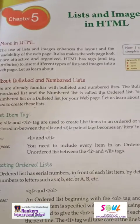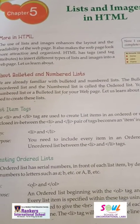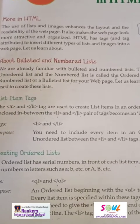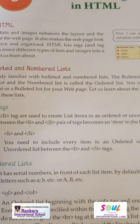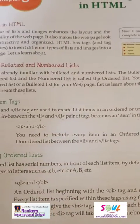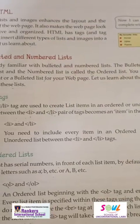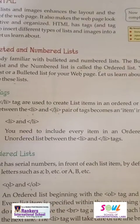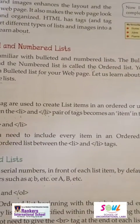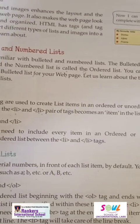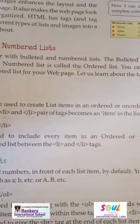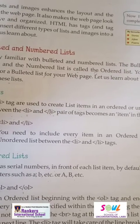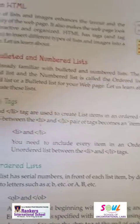Good morning. Today we will start Chapter 5: Lists and Images in HTML. In the previous class, we discussed what HTML is — HTML is HyperText Markup Language, used to create hypertext documents for the World Wide Web. HTML has two types of tags: the first is a container tag, and the second is an empty tag. A container tag has a beginning tag and an end tag, but an empty tag is standalone and does not have an end tag. For example, the br tag is an empty tag. An HTML document starts with the html tag.